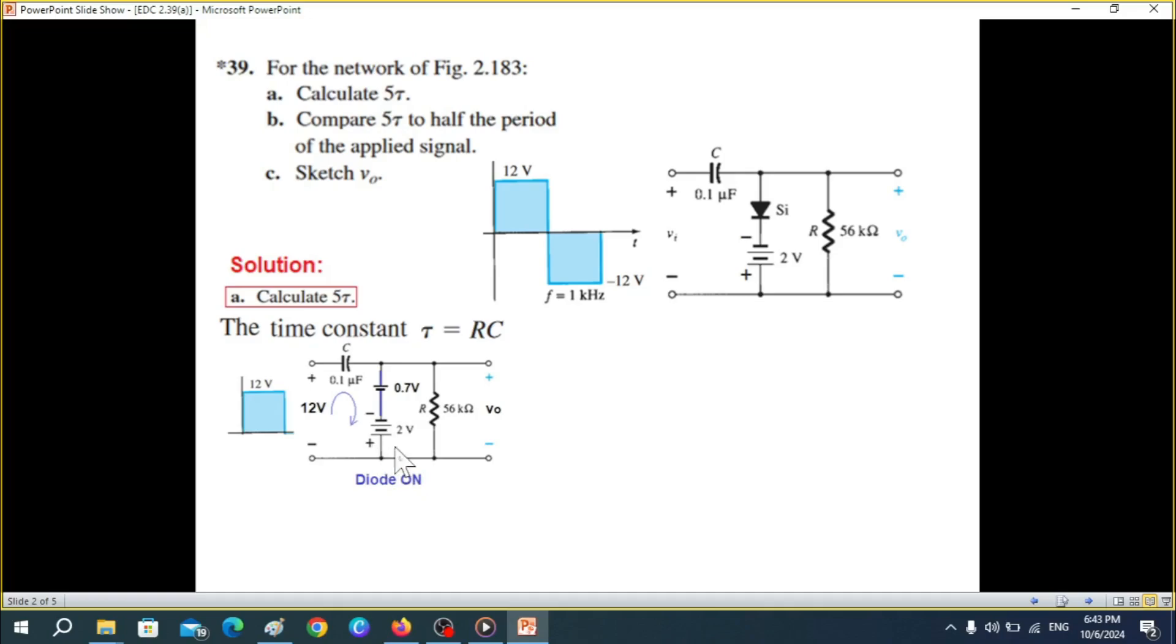Now because of this, the capacitor will start charging and current will start flowing through this circuit, and not through R. Or very, very small amount will flow through R because this is the shortest path, short circuit actually. The resistance of the diode is almost negligible, so it will take the easy path.